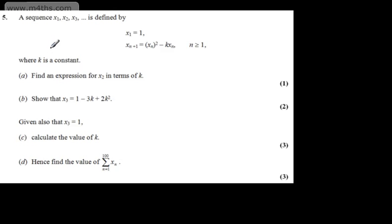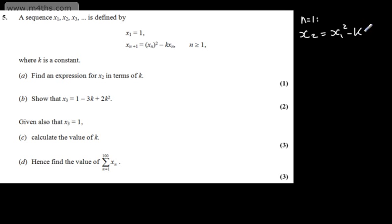In part A, for one mark, we need to find an expression for x₂ in terms of k. When n = 1, x₂ = x₁² − k·x₁. Since x₁ = 1, this gives us 1² − k·1, which equals 1 − k.